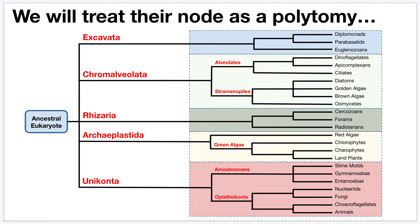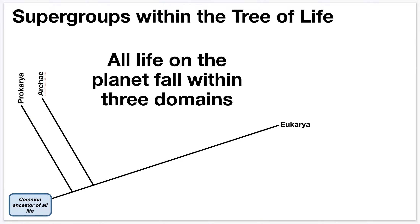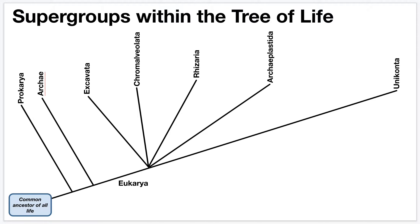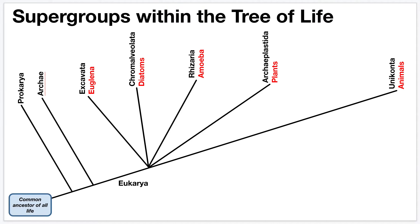Going back to how we draw this big tree of life: we've got three domains, and those three domains describe all of life on the planet. Eukarya is broken up into five supergroups that are very different from one another — Chromoviolata has completely different characteristics from Excavata or Rhizaria. The common names for these groups help you remember how one supergroup differs from another: the Unikonta include the animals; Archaeoplastida are the plants; Rhizaria includes many amoeboid forms; Chromoviolata includes diatoms and many other things; and Excavata includes organisms that look similar to Euglena.